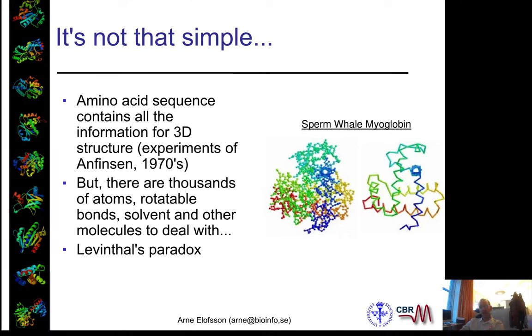However, what Levinthal pointed out was that there are thousands of rotatable bonds, solvents, and other molecules. So if you want to do an exhaustive search on this, you end up with an astronomical number of conformations. That's what's called Levinthal's Paradox.